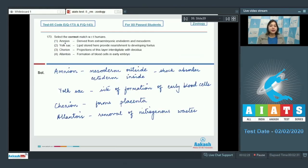Question number 173. Select the correct match with respect to humans. Number 1, Amnion derived from extra embryonic endoderm and mesoderm. This is incorrect as amnion is formed from mesoderm on outside and ectoderm on the inside. The amnion acts as a shock absorber. Number 2, Yolk sac. Lipid stored here provides nourishment to the developing fetus. This is also incorrect as the yolk sac is the site of formation of early blood cells.